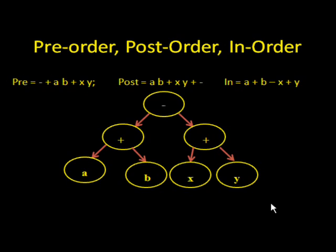We talked about the different traversals — pre-order, post-order, and in-order. Note that you can use these different traversal methods to rewrite the equations of the tree. If you did it in pre-order, you would get: minus, plus, A, B, plus, X, Y. If you did it in post-order, it would be: A, B, plus, X, Y, plus, minus. If you did it in-order, it would be identical to what you saw before, except the brackets wouldn't be there — you would have to insert the brackets yourself.